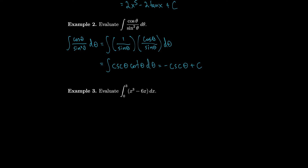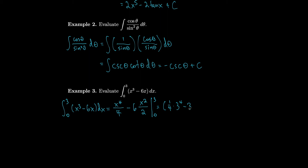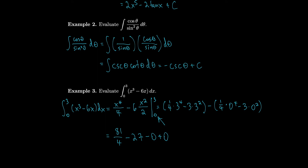Let's evaluate a definite integral. When evaluating a definite integral, we have to use the antiderivative and evaluate it. Taking the antiderivative gives us x⁴/4 minus 6 times x²/2, then we evaluate from zero to three. That's (1/4)(3⁴) minus 3(3²) minus [(1/4)(0⁴) minus 3(0²)], which equals 81/4 minus 27 minus zero, giving us negative 6.75.